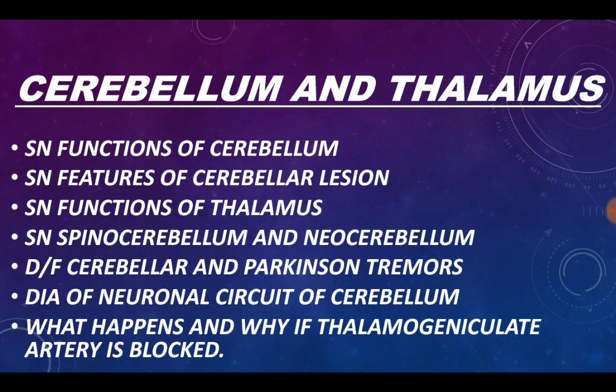Moving on to the chapter on cerebellum and the thalamus. The various questions asked from this chapter are: short note on functions of the cerebellum, features of cerebellar lesion, and functions of thalamus — these three questions are very important. Short note on spinocerebellum and neocerebellum is not that important. Difference between cerebellar and Parkinson's tremor is very important. Diagram of the circuit of cerebellum is also important. What happens and why if thalamic geniculate arteries are blocked can also be asked.